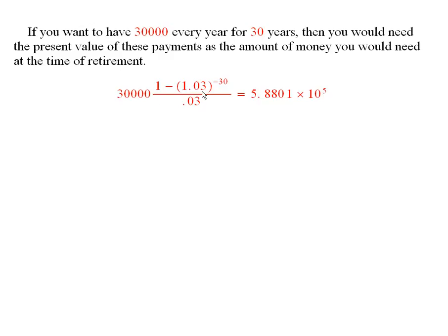that amount of money has to be equal to the present value of the $30,000 payments every year. So, since money is worth 3% per year, I would take the present value of all of those payments. There's going to be 30 payments roughly, and so you'd have $30,000 times this, and this should then be the amount of money that you would need to have at the time of retirement.